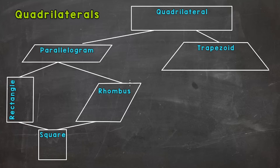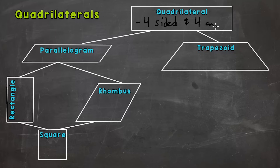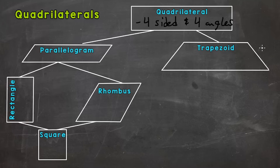Starting up top with quadrilateral: a quadrilateral is a four-sided shape that has four angles — it's a polygon. Anything that meets that criteria is a quadrilateral. A polygon means a flat, two-dimensional shape with no rounded edges and it's closed with no openings. A quadrilateral is a specific type of polygon.